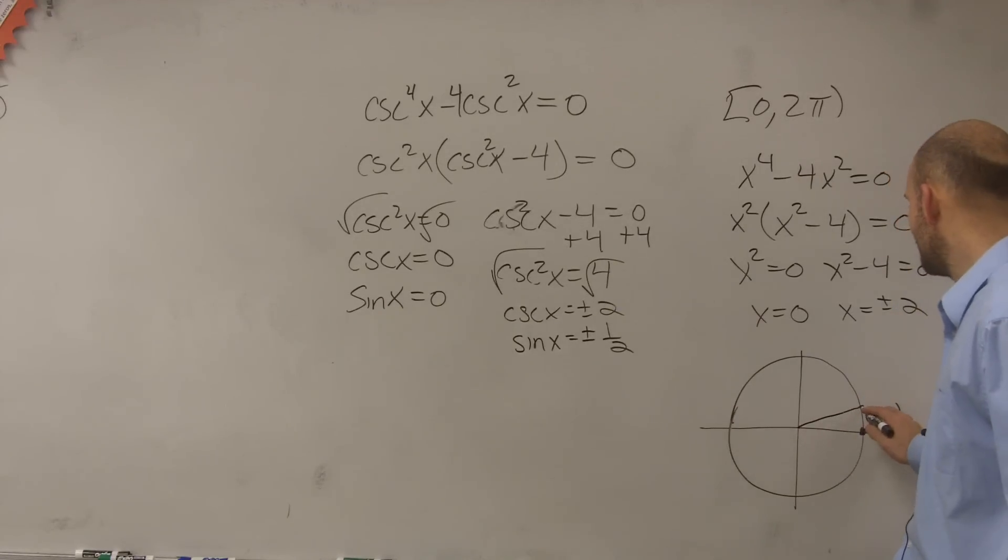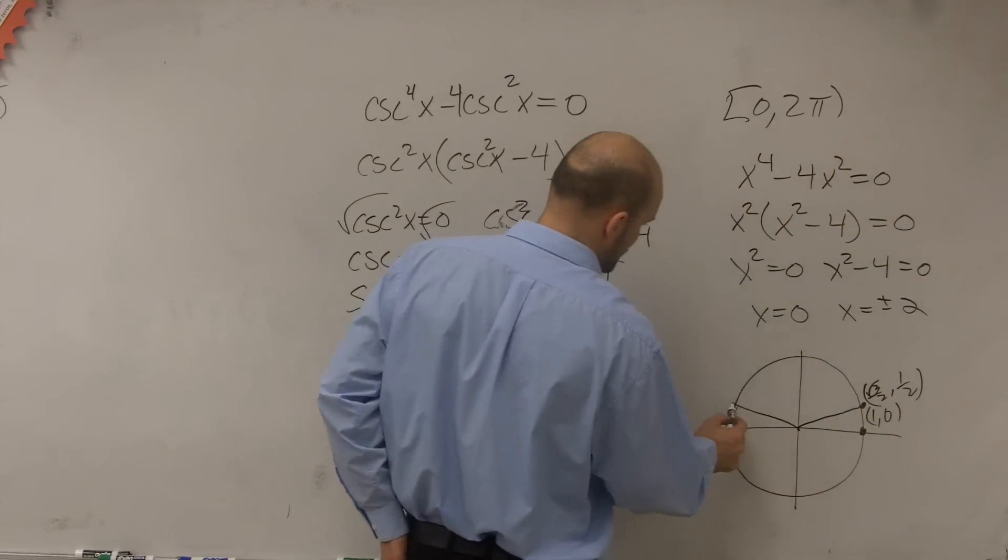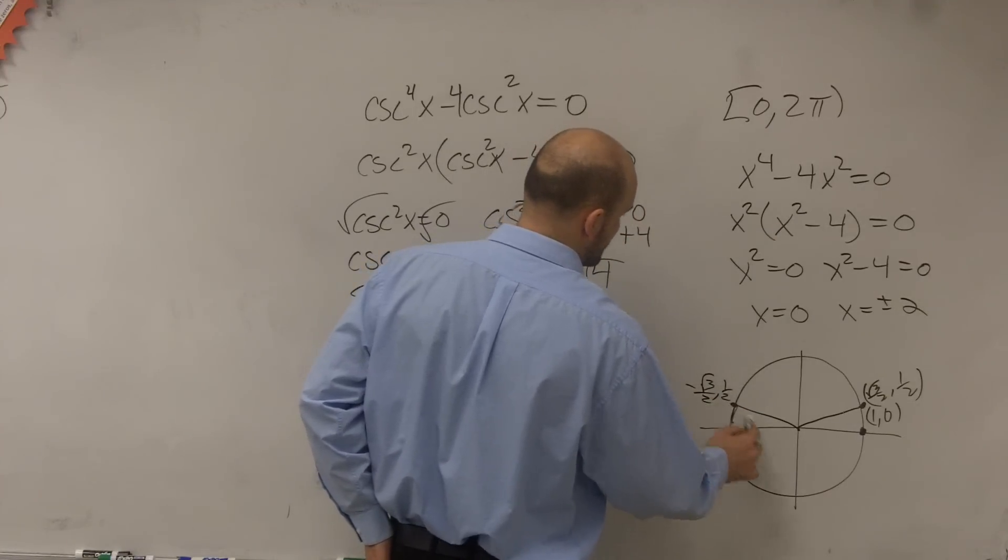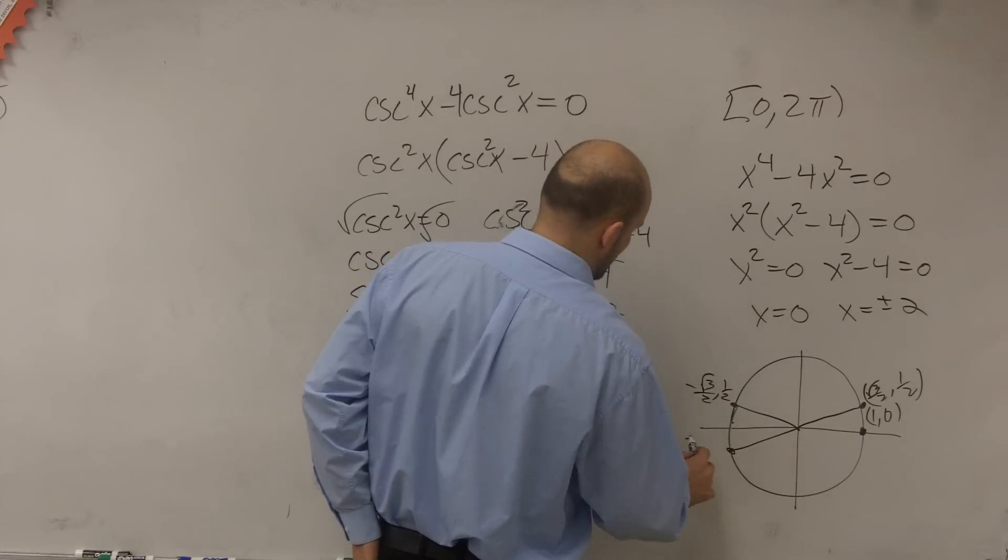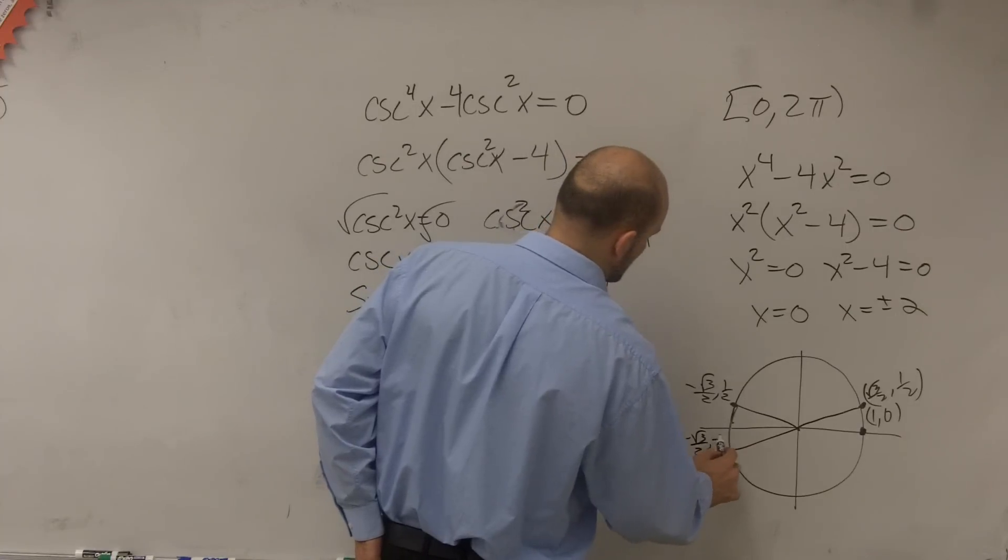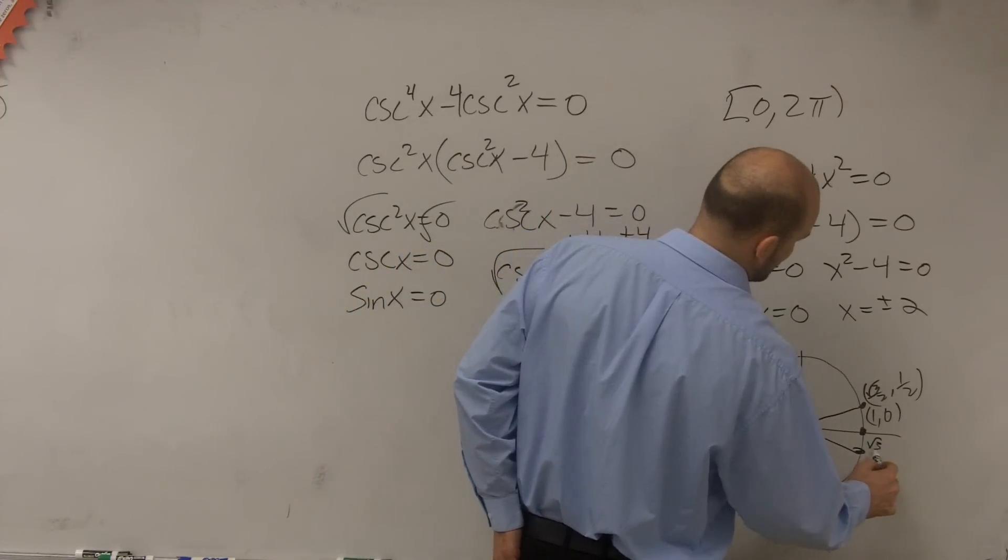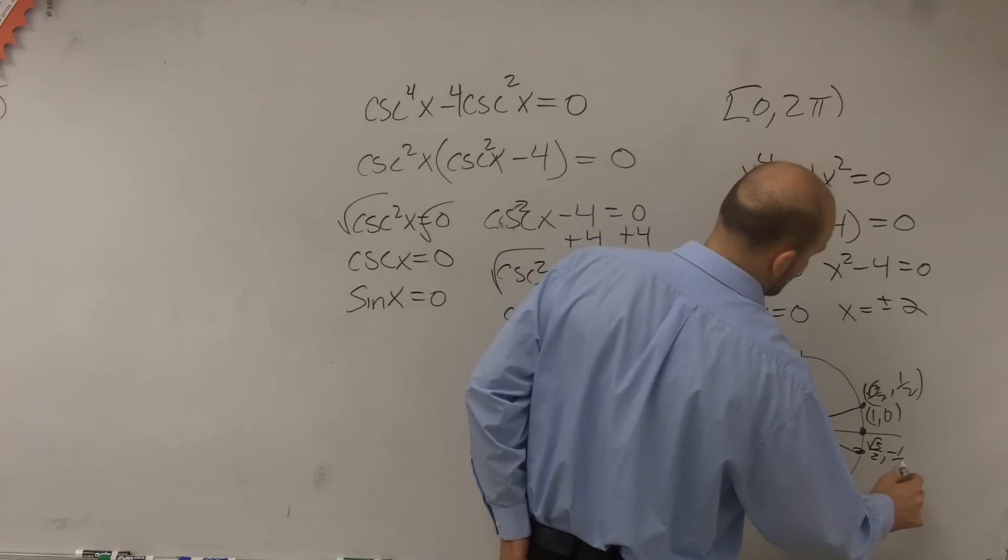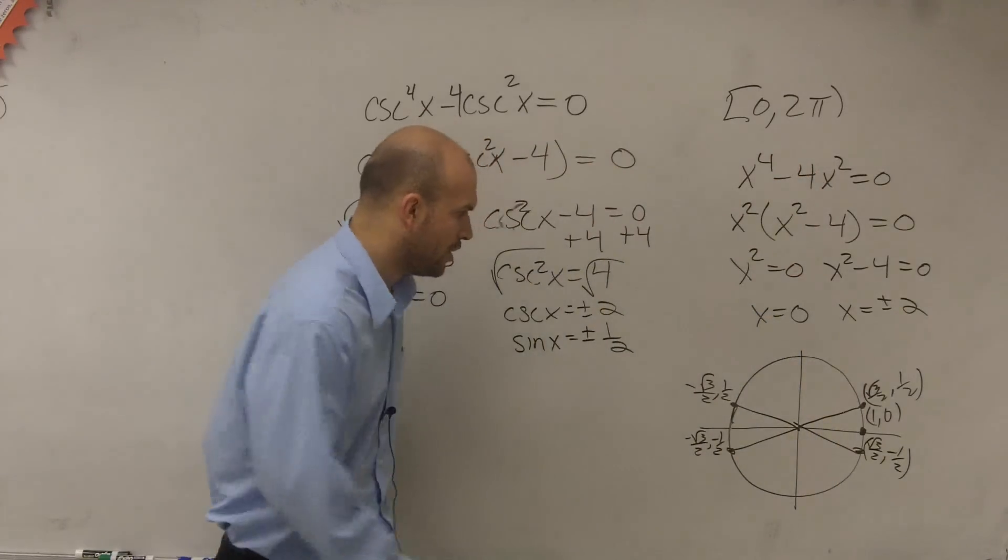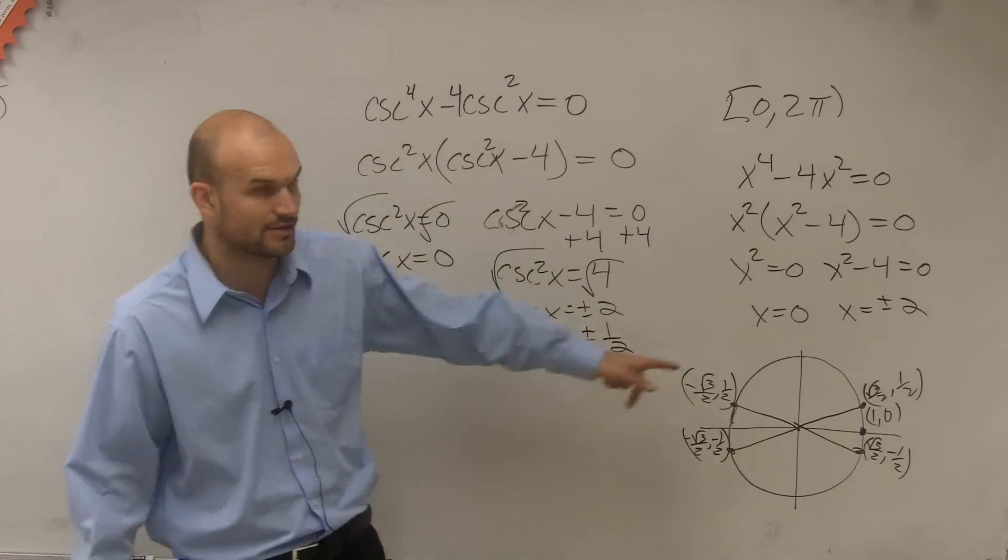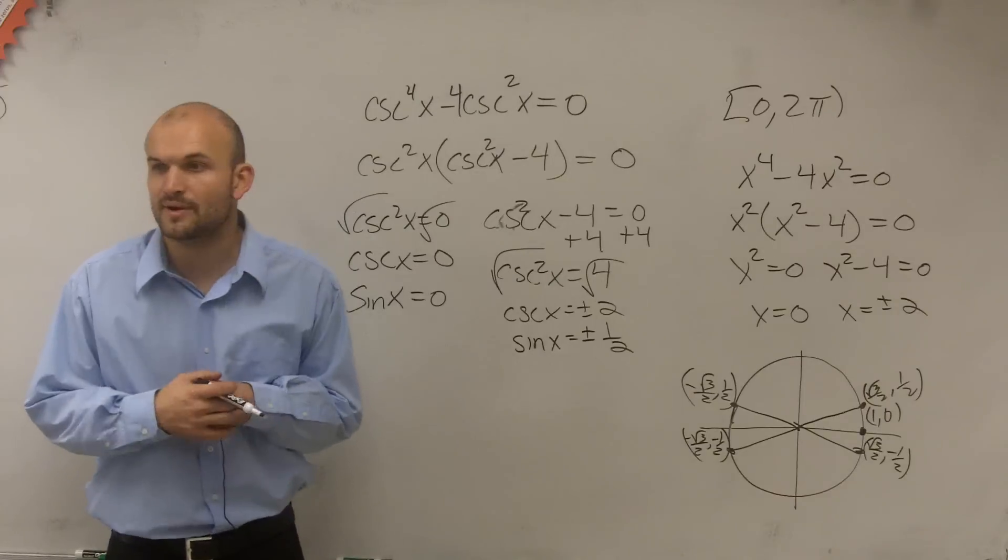Well, at this angle, I have square root of 3 over 2 comma 1 half. At this angle, I have negative square root of 3 over 2 comma 1 half. Here, I have negative square root of 3 over 2 comma negative 1 half. And at this angle, I have square root of 3 over 2 comma negative 1 half. So I have all these different points that my sine value is either at 0 or at plus or minus 1 half.